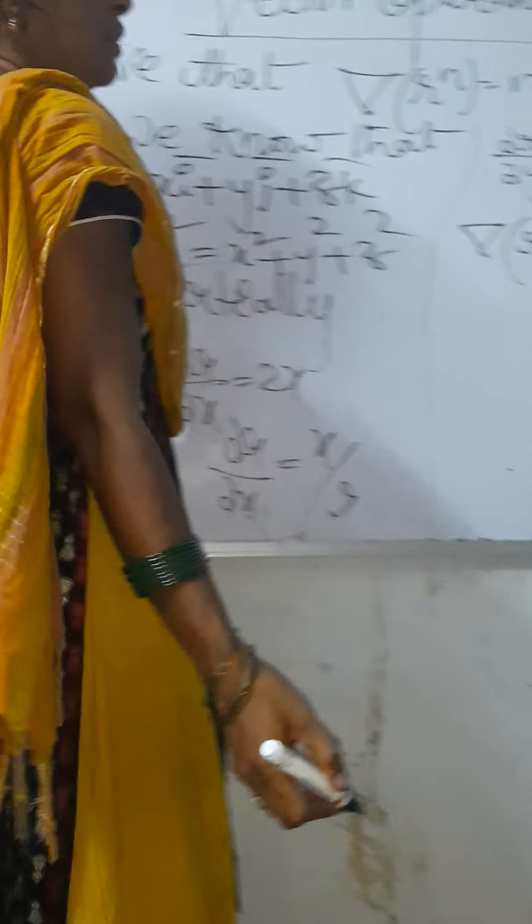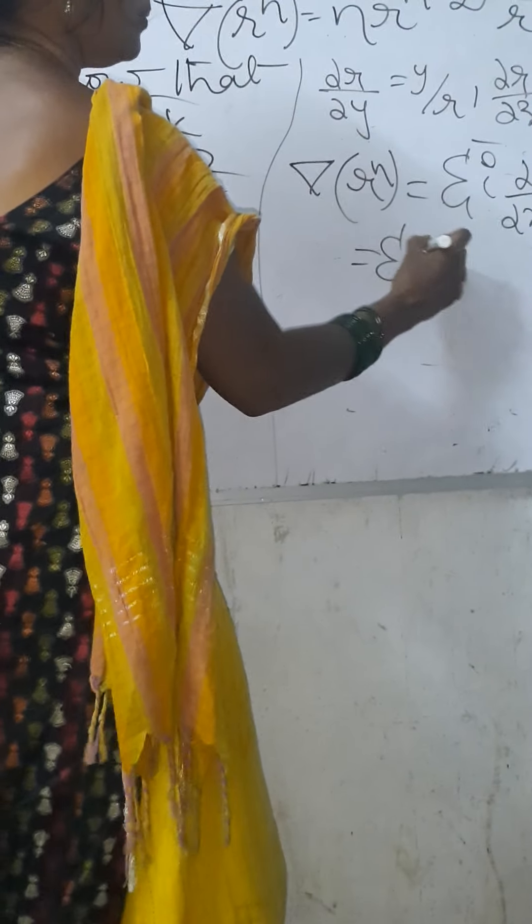Next, we take the given problem: delta of r power n equals to sigma i bar, dou by dou x of r power n. That is, sigma i bar times n into r power n minus 1 times dou r by dou x, which equals to sigma i times n r power n minus 1 times x by r.